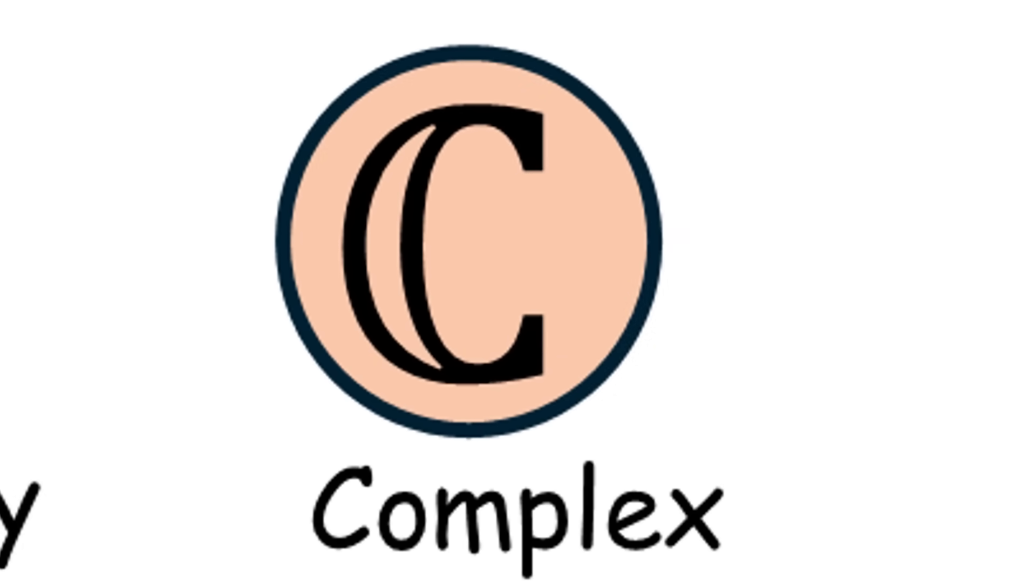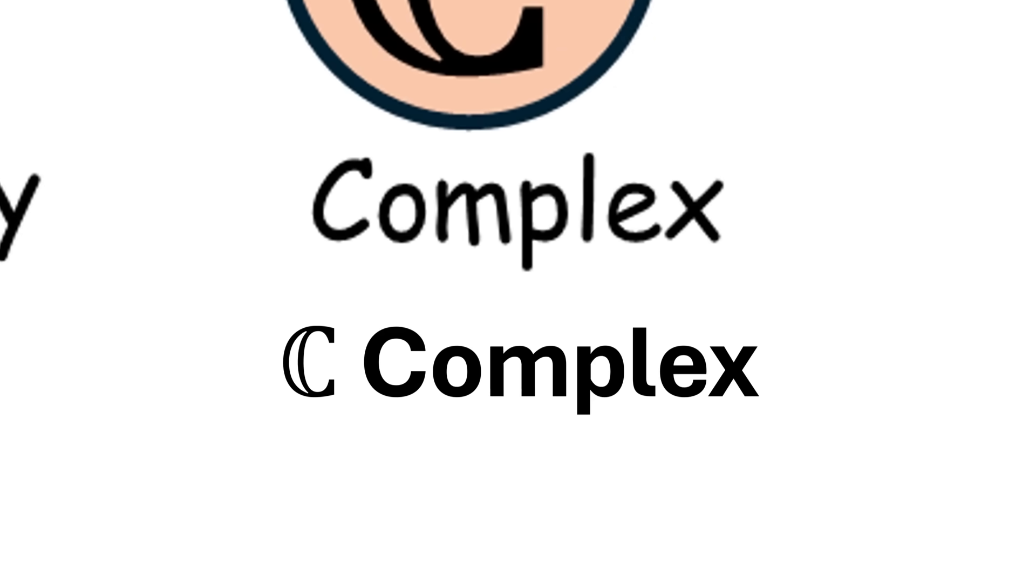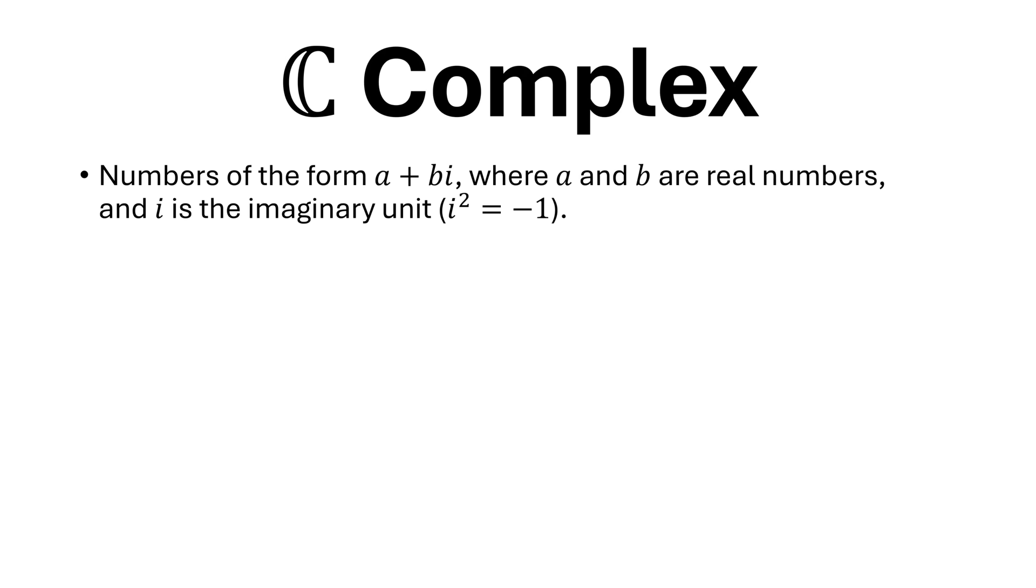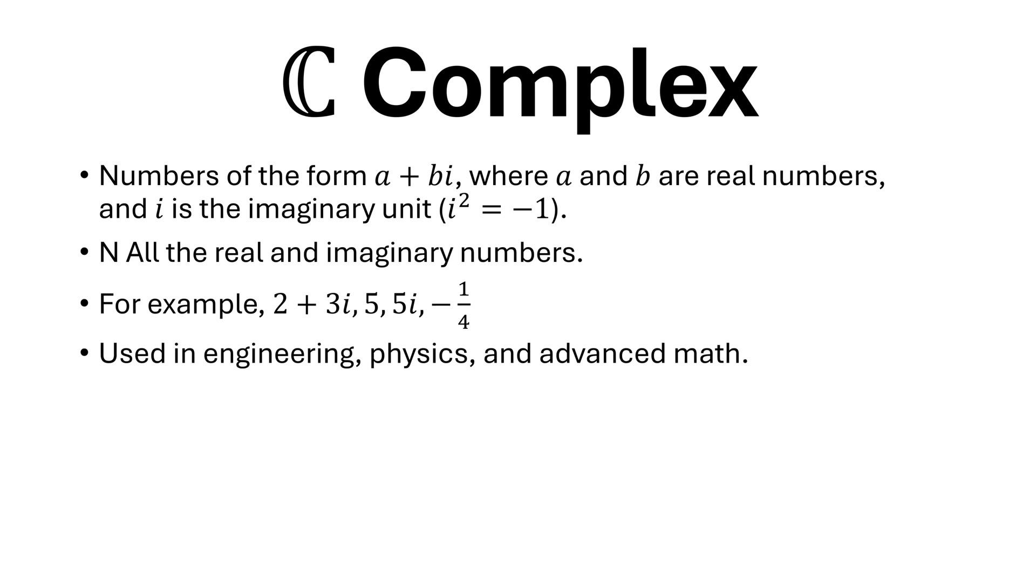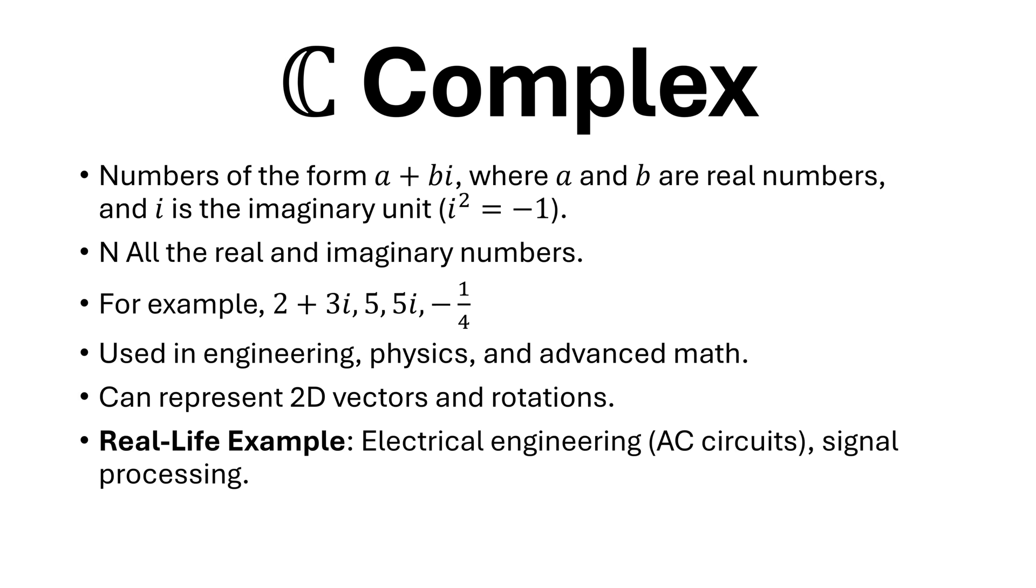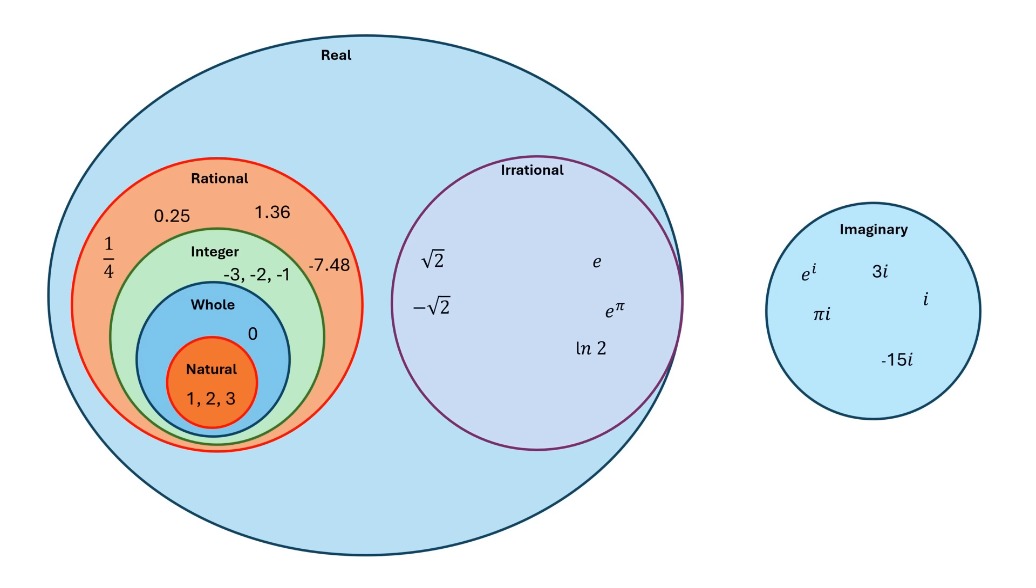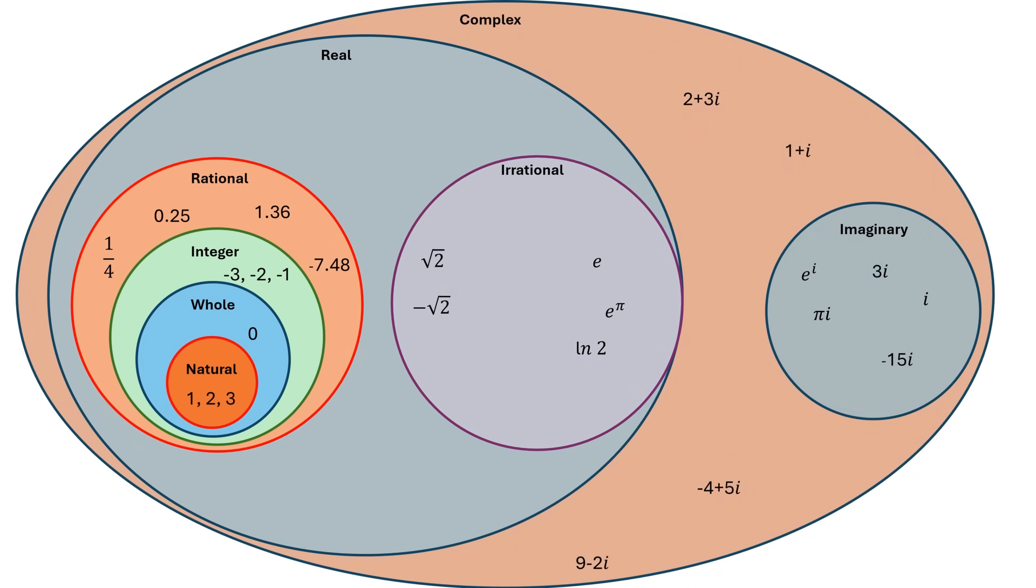Complex numbers of the form A plus Bi, where A and B are real numbers and i is the imaginary unit. Includes all the real and imaginary numbers. For example, 2 + 3i, 5, 5i, -1/4. Used in engineering, physics, and advanced math. Can represent 2D vectors and rotations. Real-life examples include electrical engineering, AC circuits, and signal processing.